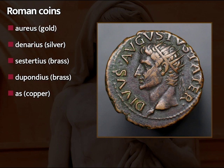The Denarius starts out being worth 10 asses, which is where the name comes from. Later there are four asses to the Sestertius and four Sestertii to the Denarius — though this varies over time and is sometimes reformulated. There are about 25 Denarii in the Aureus. The Aureus is used only for luxury goods transactions, while ordinary everyday transactions involve the Denarius, Sestertius, and the as.